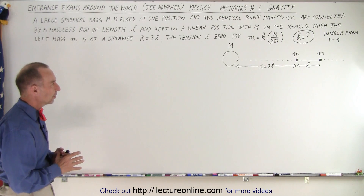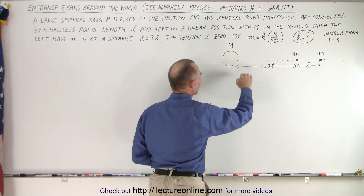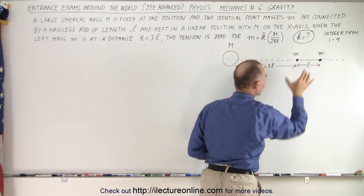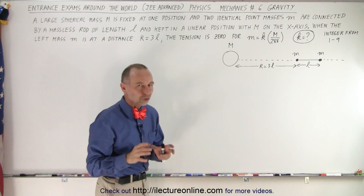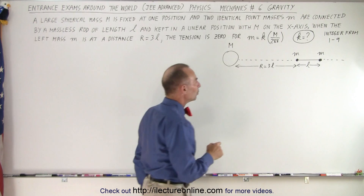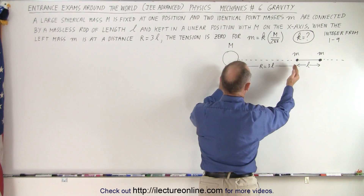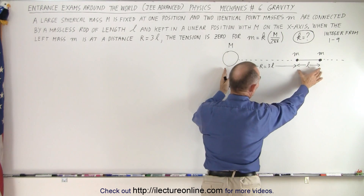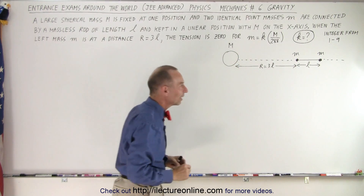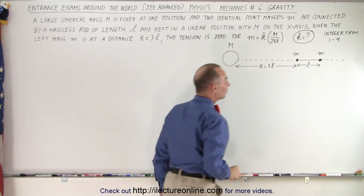We have three masses: a large mass M, which is spherical, placed in line with two smaller masses, little m and little m, and those are connected with a massless rod. They're all kept in a line. At the moment that the left mass is at distance 3L from the large mass, where L is the length of the rod, the tension in the rod is equal to zero.